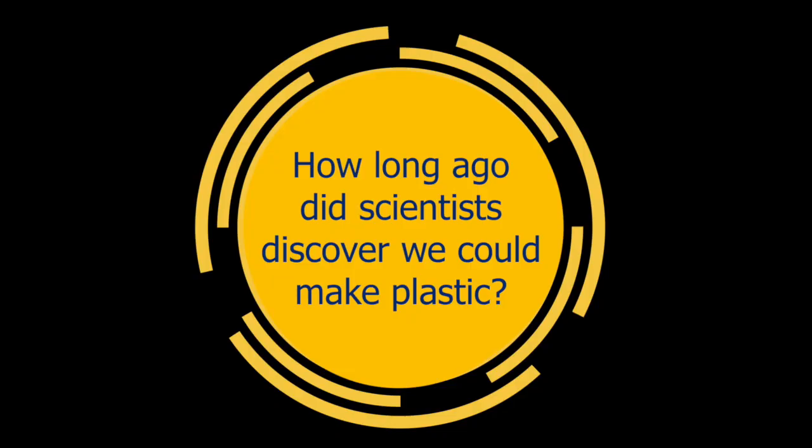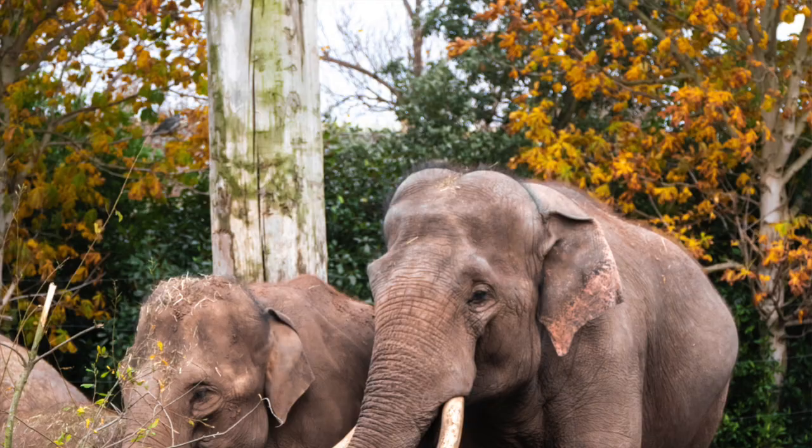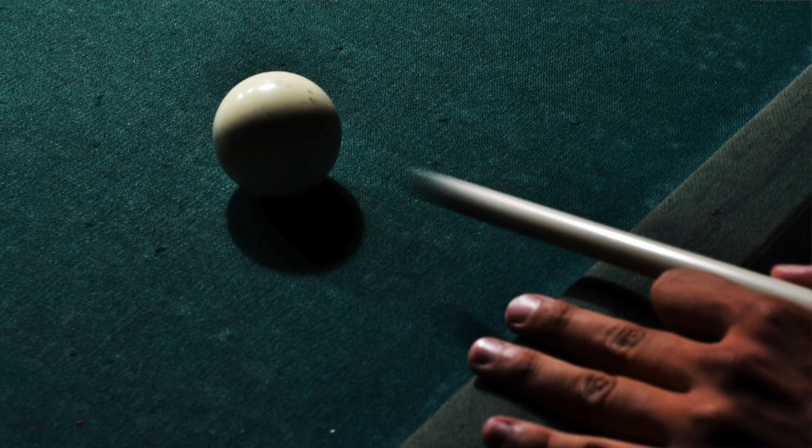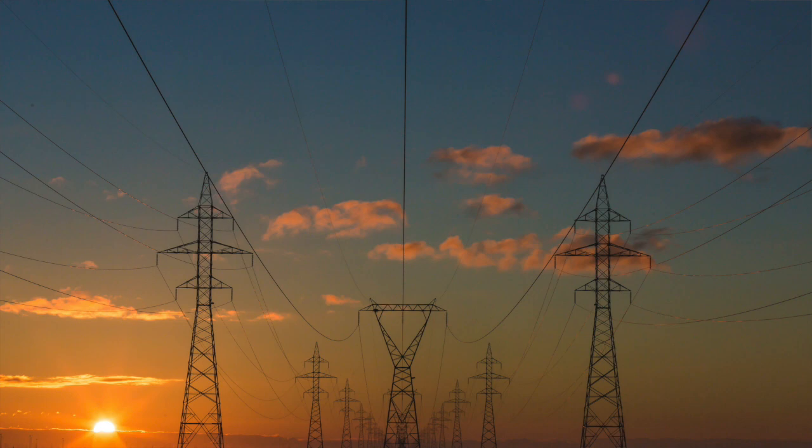So let's get back to our topic for today — the history of plastic. Humans have been living on this planet for about 200,000 years. Do you know how long ago it was that scientists discovered we could make plastic? In the middle of the 19th century, scientists began to explore different ways that they could make a plastic-like substance. They were trying to find something to use instead of ivory from elephants' tusks to make snooker balls. But it was in 1907 that a scientist created Bakelite, a kind of modern-day plastic used to cover electrical cables.